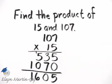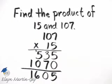What is the product of 15 and 107? It is 1,605.